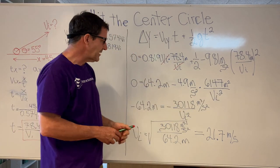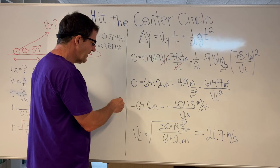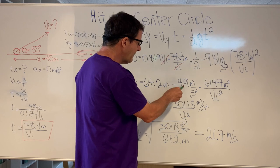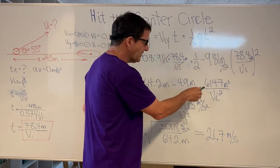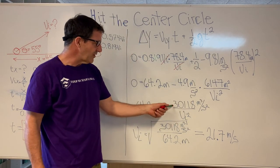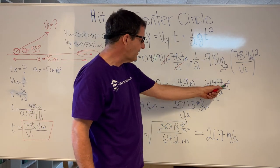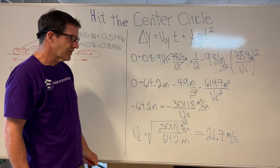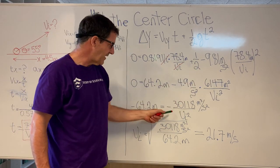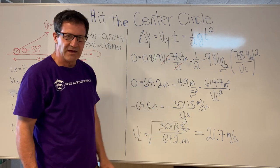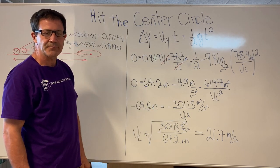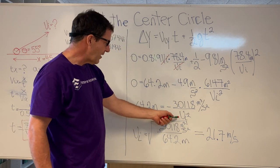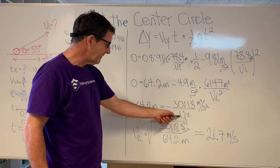In the next step, I'm going to bring 64.2 to the other side, giving minus 64.2 meters, and multiply 4.9 times 6,147, which gives 30,118. The units here work out to meters cubed over second squared. Don't forget the minus sign, and then we have the initial velocity squared. We want to solve for the initial velocity, not the initial velocity squared, so we can switch those two terms and then take the square root.